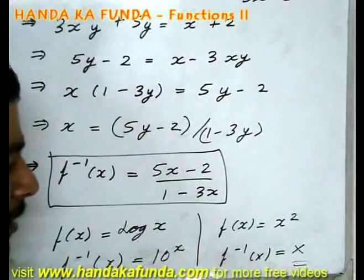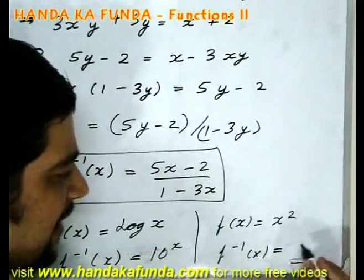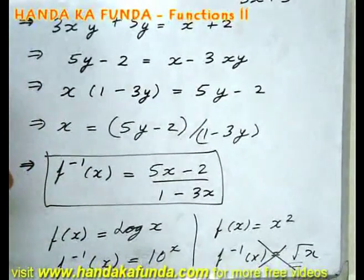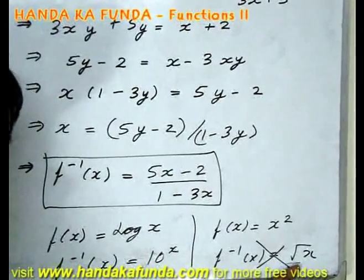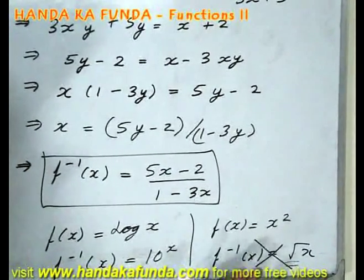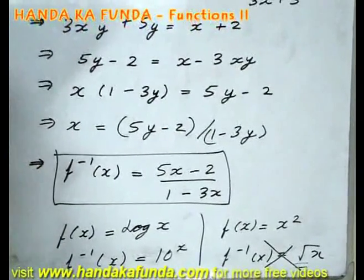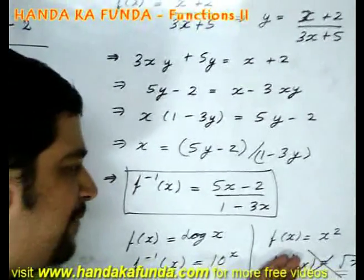Why so? Because f inverse of x ideally would be root x, but that is wrong. Why is it wrong? Because if I put x is equal to 9 here, f inverse of x can be 3 or minus 3. I cannot obtain two values in case of a function and that is why this would have been wrong.